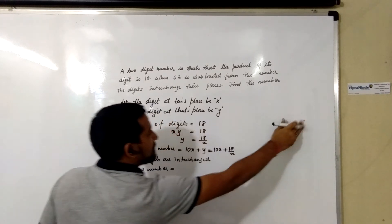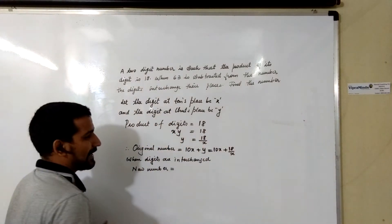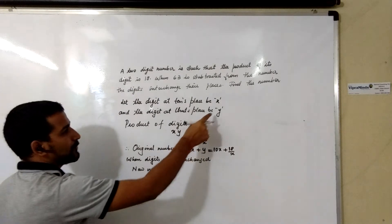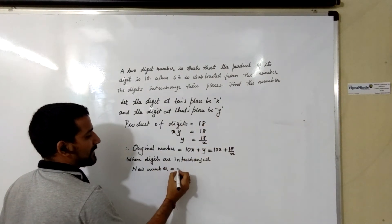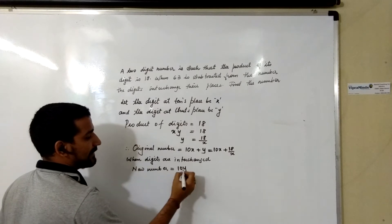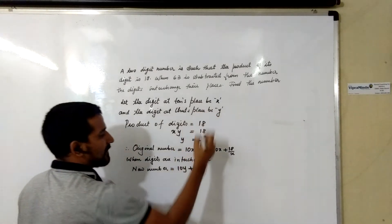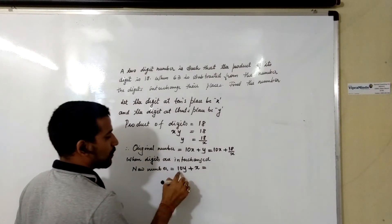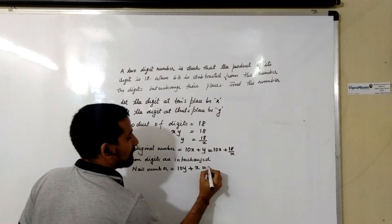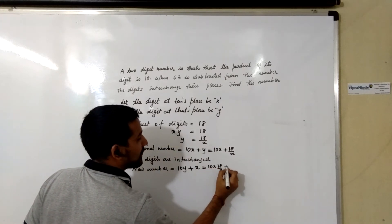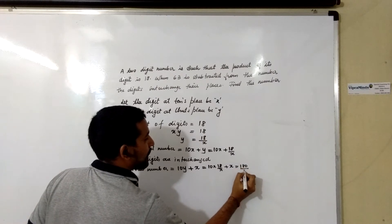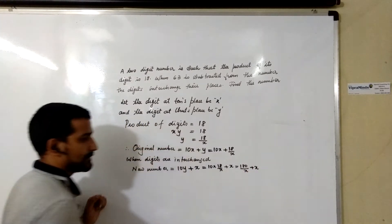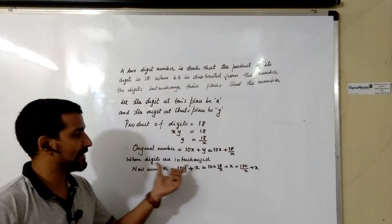The tens place digit goes to units place and the units place digit goes to tens place. Here, the units place digit was Y, so it becomes 10Y. The new number will be 10Y + X. Since Y = 18/X, it becomes 10 × (18/X) + X = 180/X + X. This is the new number when the digits are interchanged.